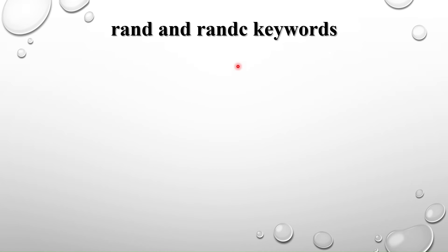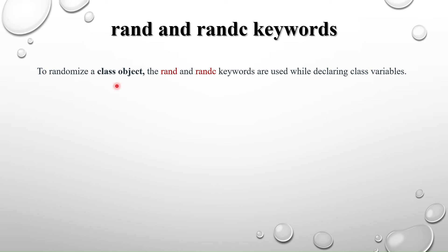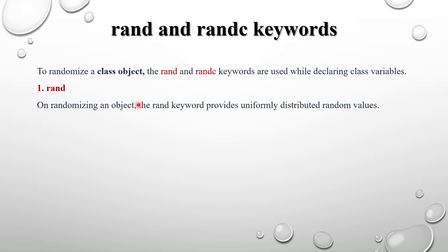Now we will see how to randomize class objects. Inside a class, we have a set of variables. To randomize the variables present inside the class, we use the keywords rand and randc. These keywords are used while declaring class variables. The rand keyword provides uniformly distributed random values. The syntax places the rand keyword before the variable declaration — only variables declared with rand will be randomized.